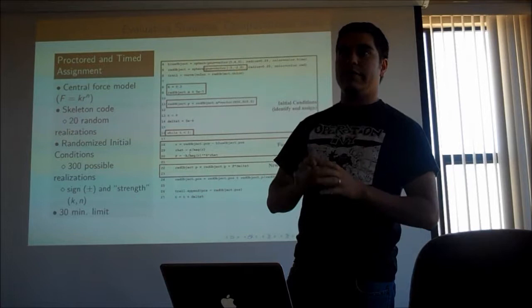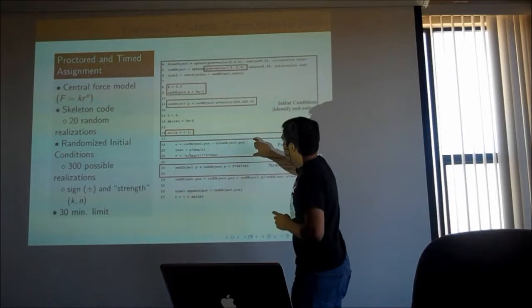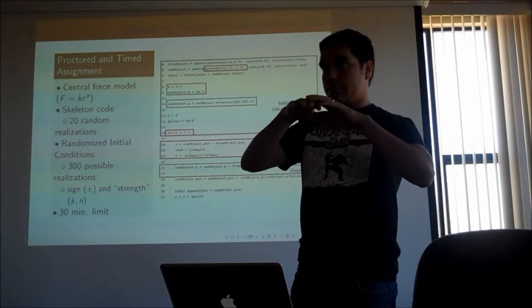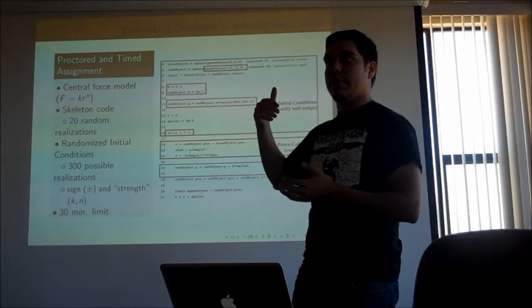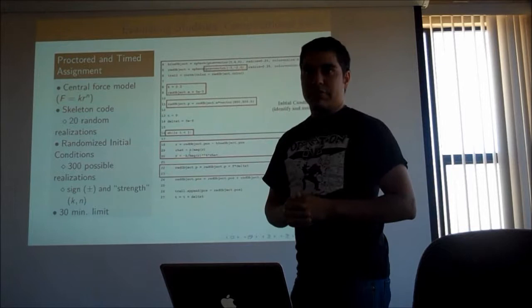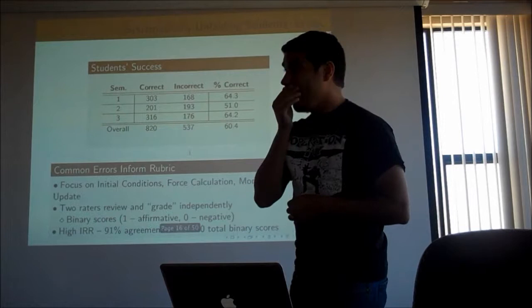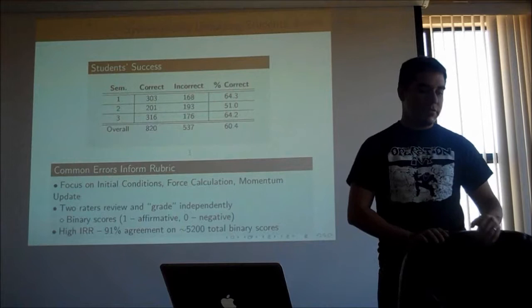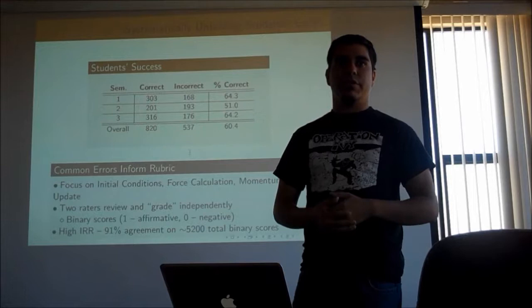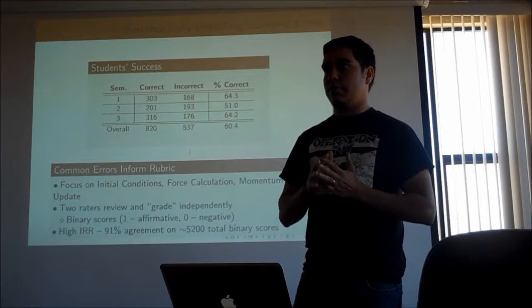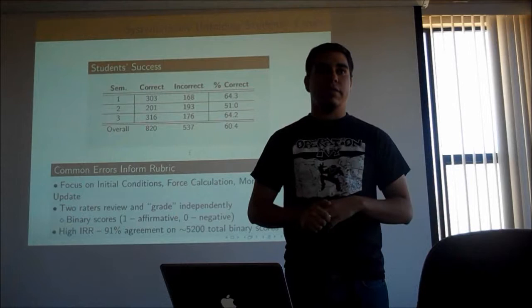The main thing they had to update was the force calculation — they had to interpret a description of what a central force is into a formula that Python understands. This was a proctored assignment given at the end of laboratory, with TAs walking around ensuring students were on task and not sharing or using the internet. Roughly 60% of students were able to solve it, which was surprising because with our initial lab implementation we expected around 33% since groups are groups of three and typically one person was the vPython person.